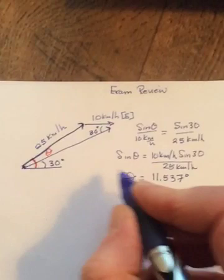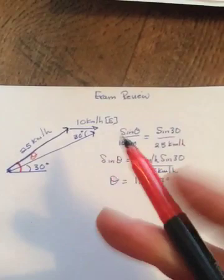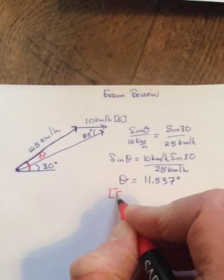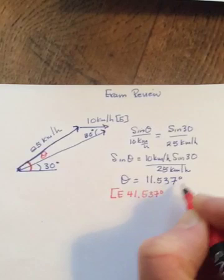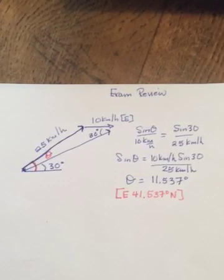But that's just the angle inside. So now to get the full angle that they're asking you for, you have to add it to 30, and then you're going to put it in square bracket. From the east, 41.537 degrees north. That's the first part of the question, which way should he head?